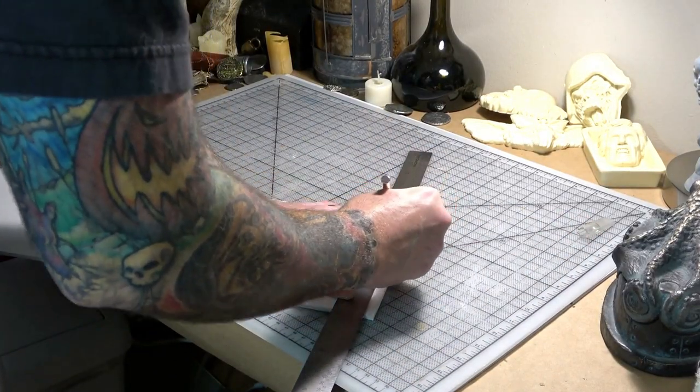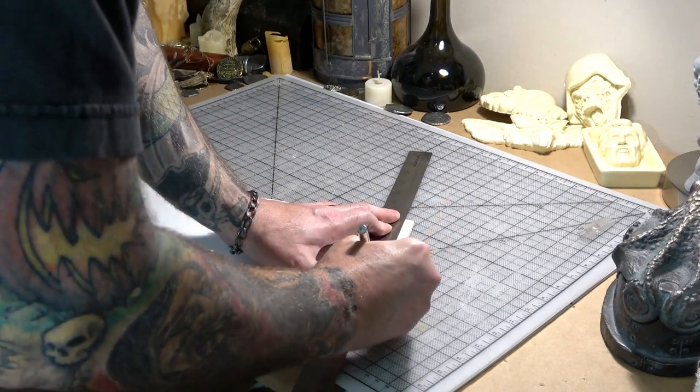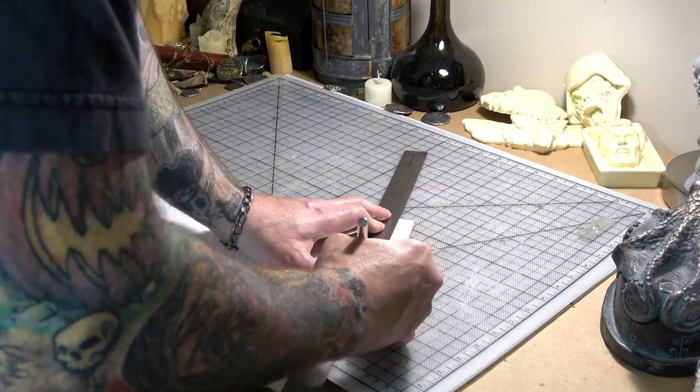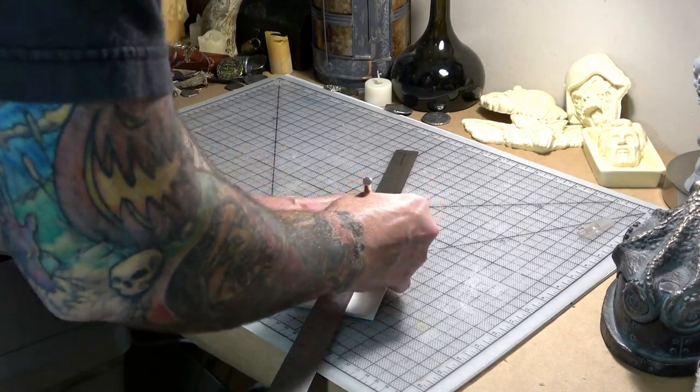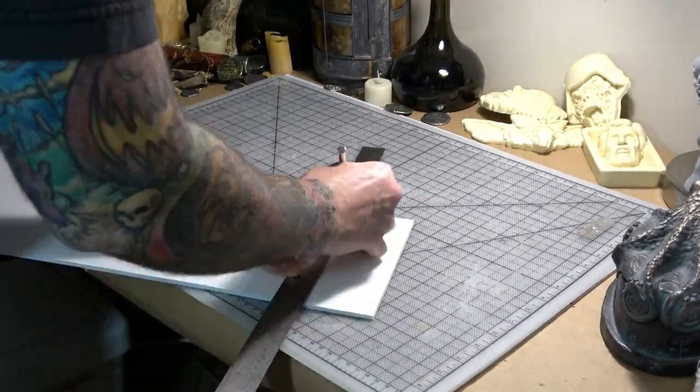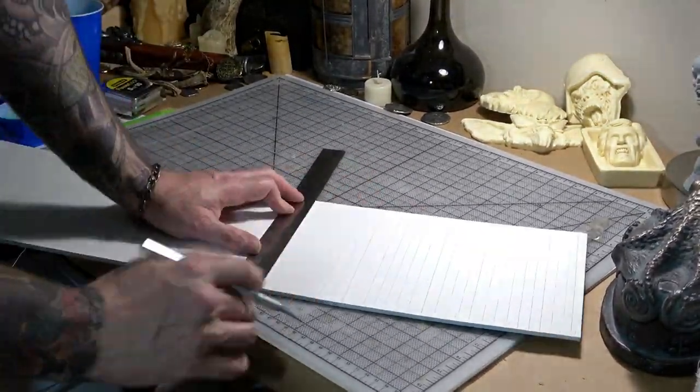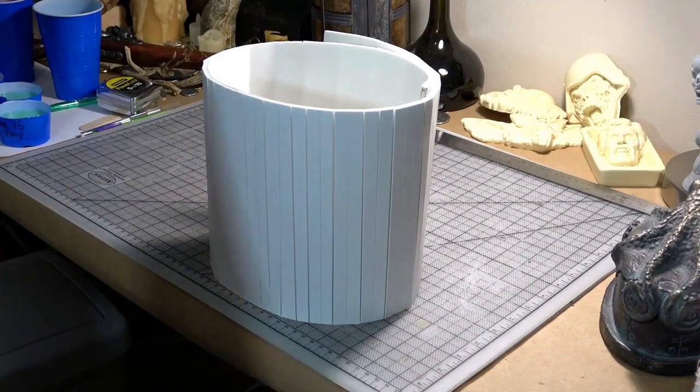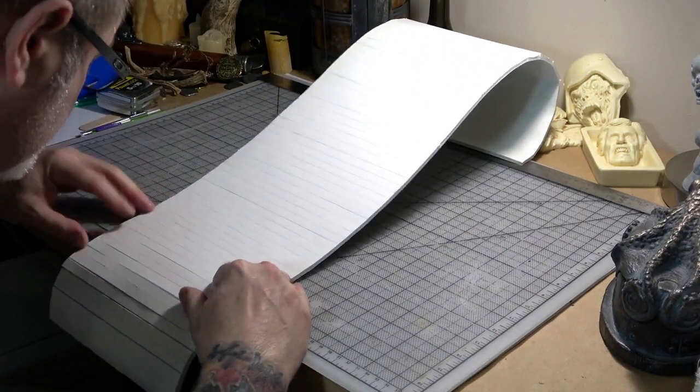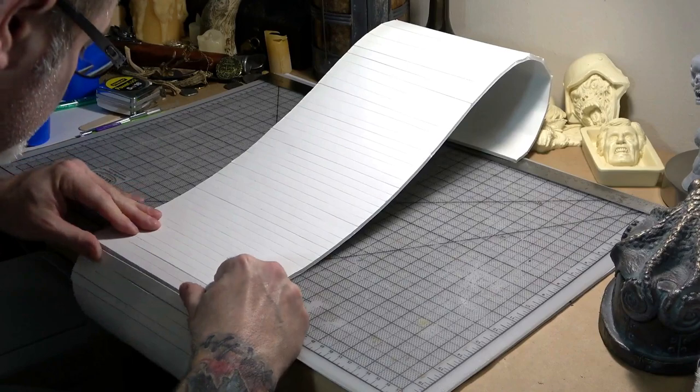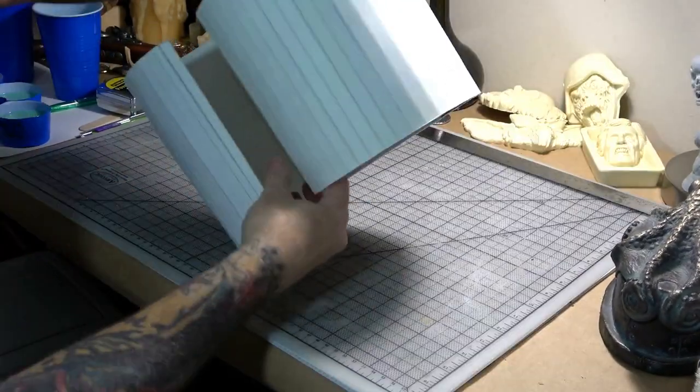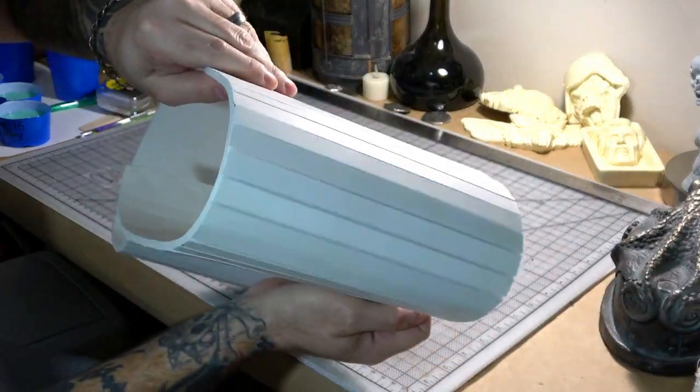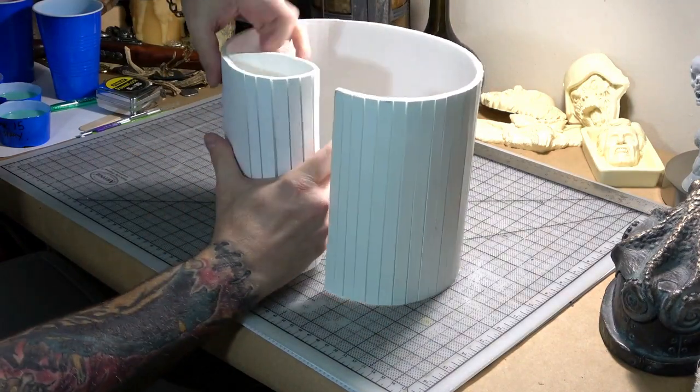Next, I make vertical slices about every half inch or so, being very careful not to cut all the way through. You only want to cut through the back layer of paper. Then I use the edge of the table to snap each of these cuts a little bit. Now you have an extremely flexible and versatile wall for your mold box that can easily bend around complex shapes.